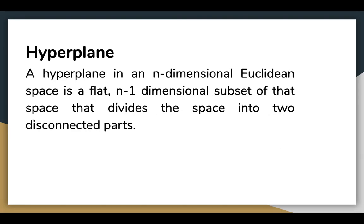Let's talk about the hyperplane. A hyperplane in an n-dimensional Euclidean space is a flat n-1 dimensional subset of that space that divides the space into two disconnected parts. So a line is a hyperplane, or even a 2D plane for 3D data is a hyperplane.